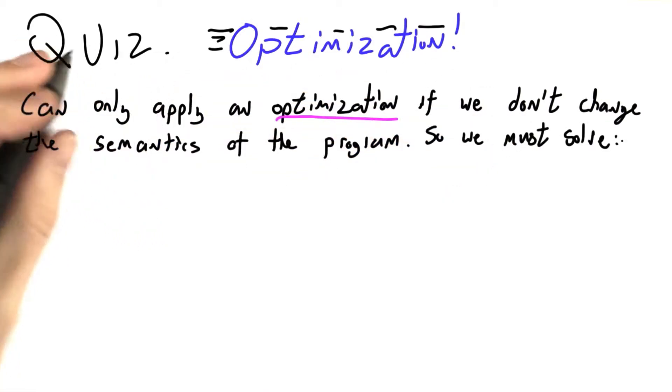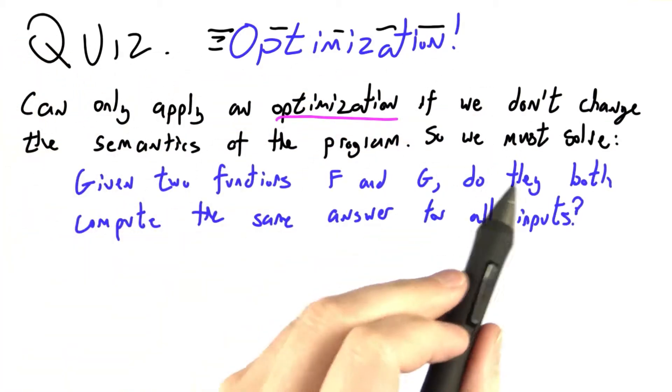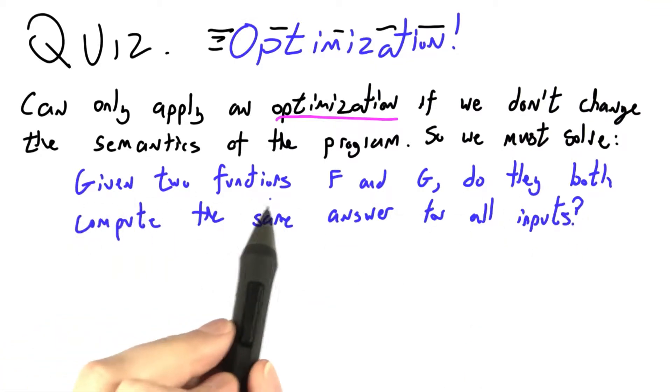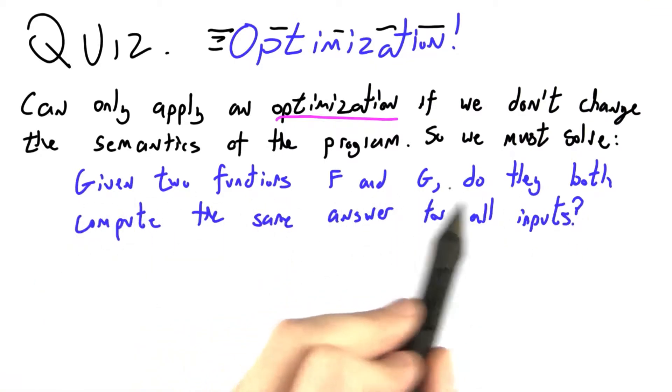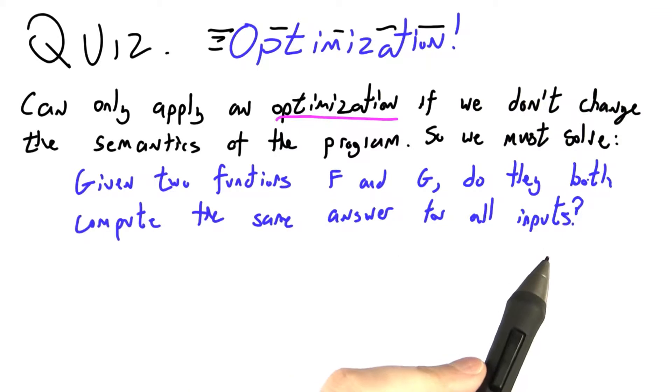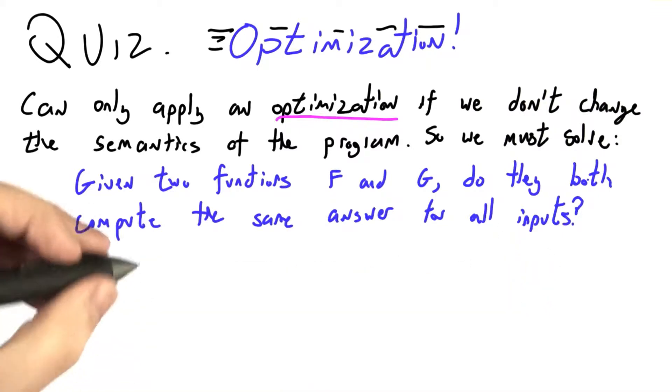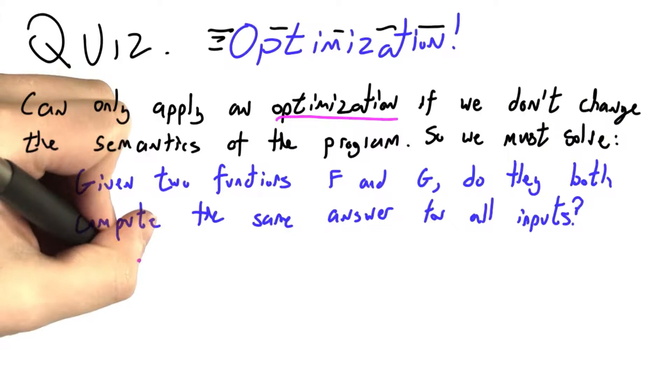So here's another way to look at the challenge of optimization. What we really want to know for optimization is, given two functions, f and g, do they both compute the same answer for all inputs? This may seem a little abstract,